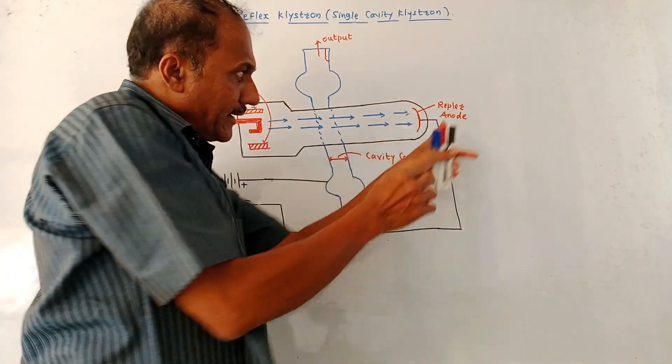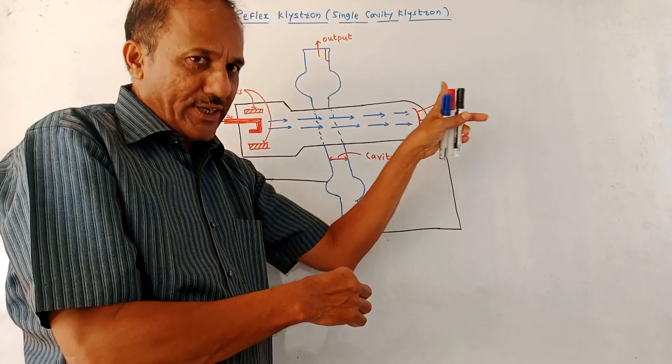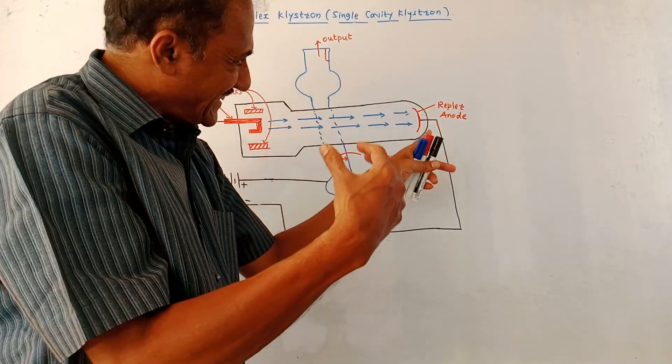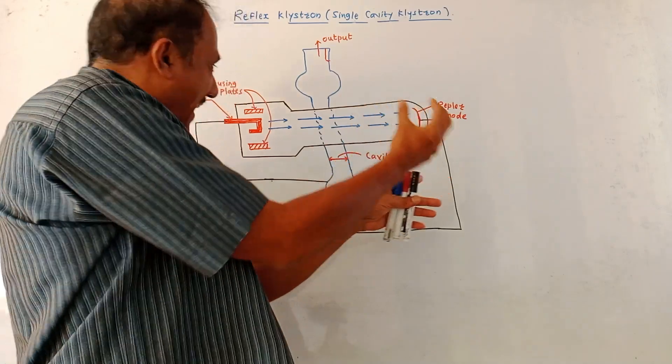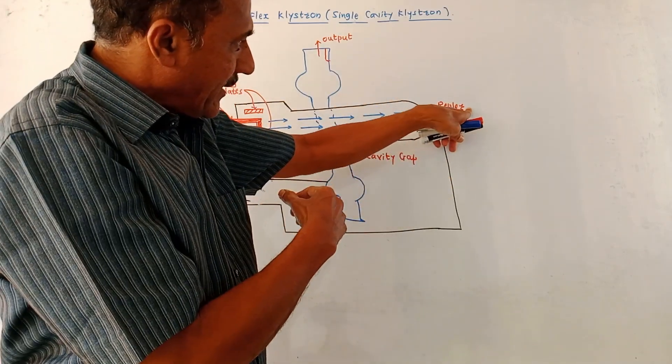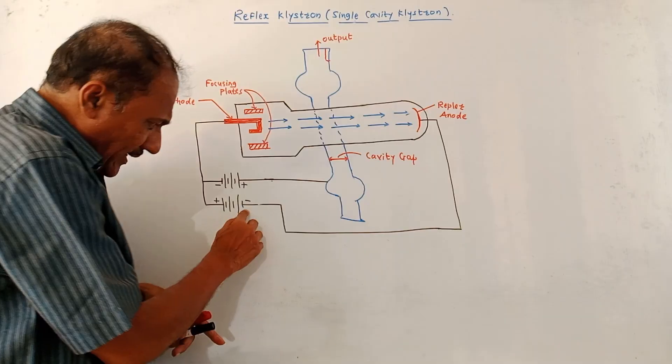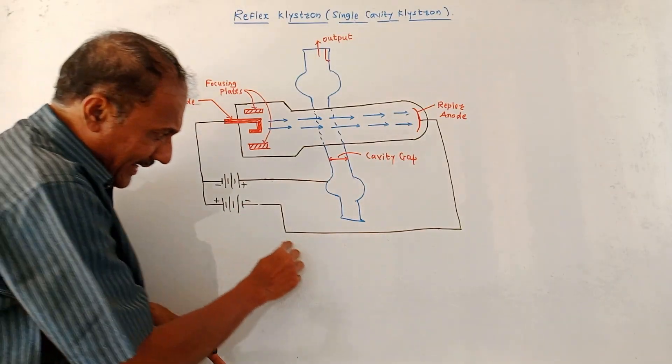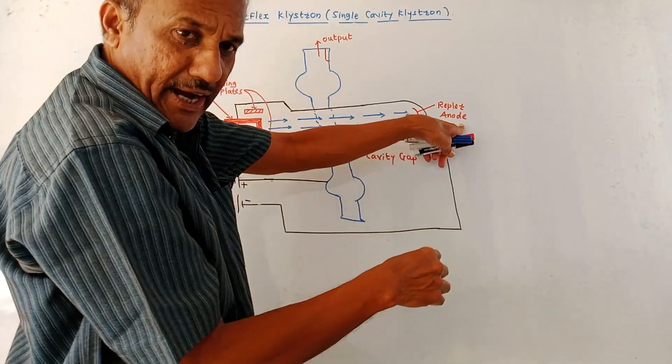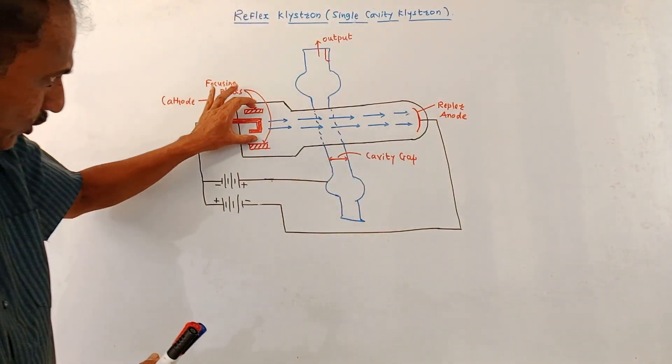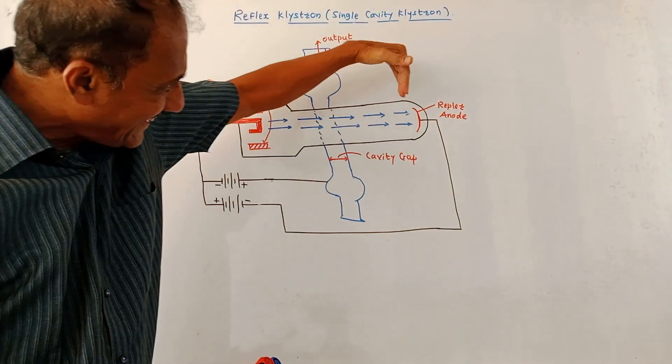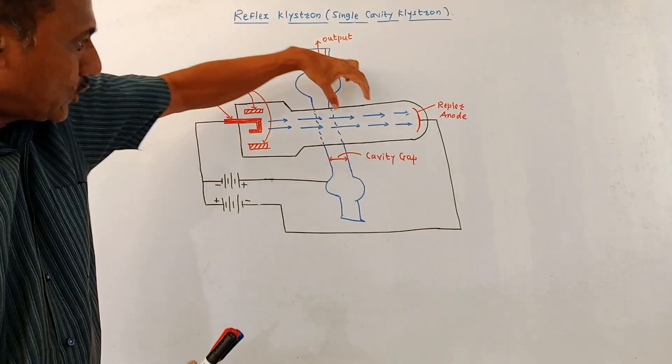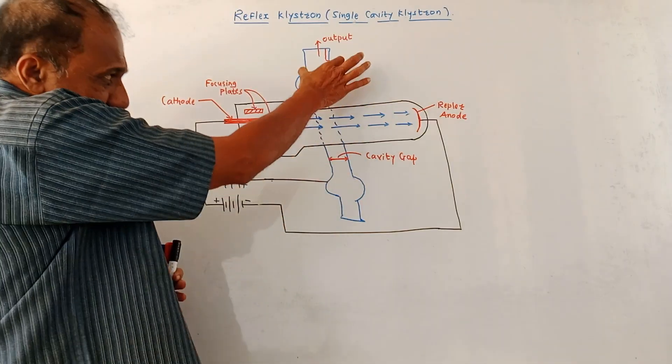This part is called repeller anode. Actually it is the anode which causes returning of the electrons back to the cavity. Look at the connections. The negative terminal of the power supply is connected to this repeller anode. So whenever electrons are moving forward, they reach the repeller anode and get reflected back towards the cavity.